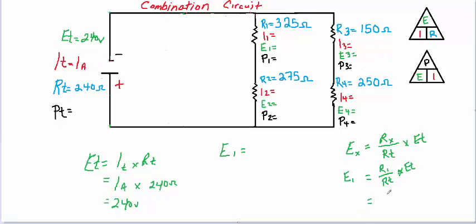So plugging in the values, resistance 1 is 325 ohms, and the total in that branch is 600, so 325 divided by 600 ohms, times the total voltage of 240 volts, should leave you with 130 volts. So the voltage here at 1 is 130 volts, we've got a 130 volt drop.